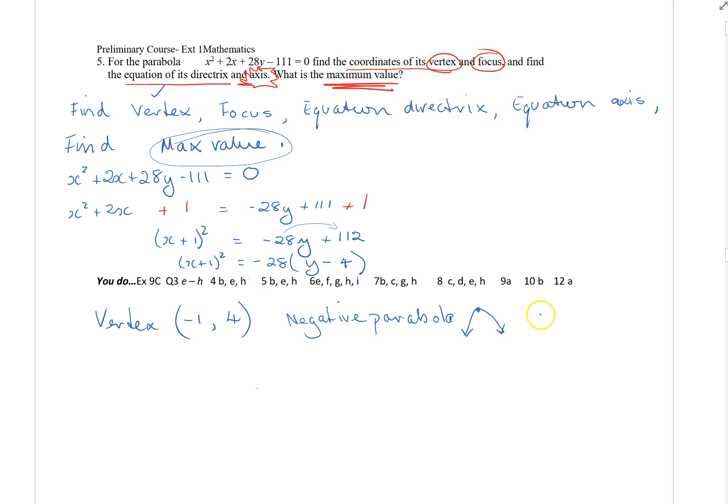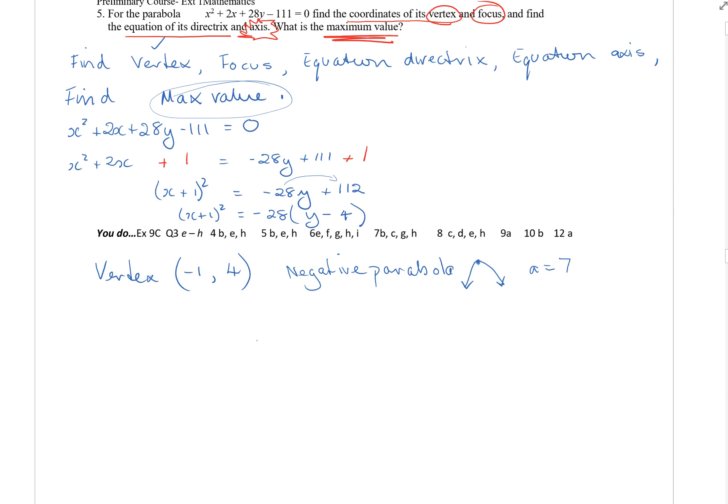I could work out the focal length from that. So this is 4a, so a is equal to 7. The focal length is 7. But from there I really feel like I need to go to a diagram to get any further understanding of really what's going on.